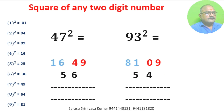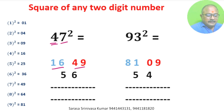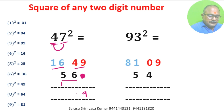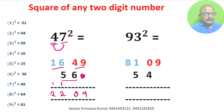47 square: square of 4 is 16, square of 7 is 49. We multiply: 4 into 7 is 28, 28 into 2 is 56. In units place we don't write anything. 9, 4 plus 6 is 10, 6 plus 5 is 11, 11 plus 1 is 12, 1 plus 1 is 2. 47 square equals 2209.